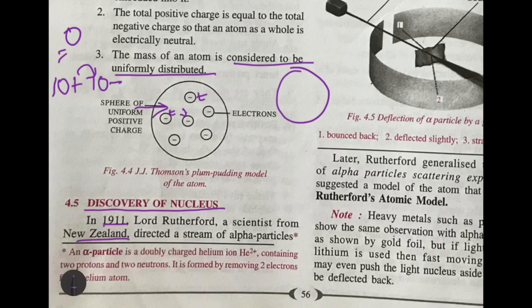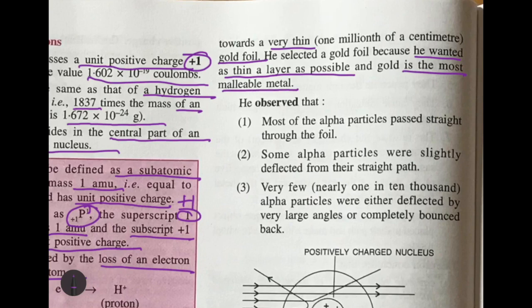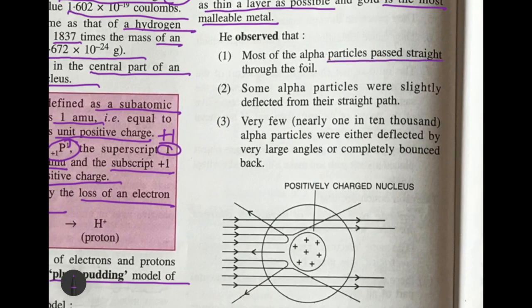In 1911, Lord Rutherford, a scientist from New Zealand, directed a stream of alpha particles — a doubly charged helium ion containing two protons and two neutrons — towards a very thin gold foil, one millionth of a centimeter thick. He chose gold because it is the most malleable metal and could be beaten into very thin sheets. He observed that most alpha particles passed straight through the foil, some were slightly deflected, and very few — nearly one in ten thousand — were either deflected by very large angles or completely bounced back.